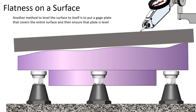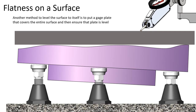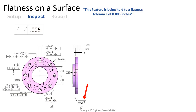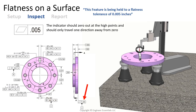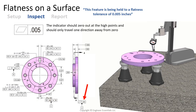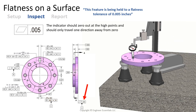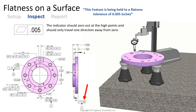Another method to level the surface to itself that's not so iterative is to use a gauge plate. The important part is that the gauge plate is large enough to cover the entire surface you're inspecting and that the two surfaces involved are parallel to each other to a high level of certainty. We take that plate and level it with the height gauge — we simply need to make sure that plate is parallel to the granite table. This method also ensures we've leveled the surface to itself. At any point during this process, if we drag an indicator across that surface and get a value less than our listed flatness tolerance, we can accept that part. During inspection, the indicator zeros out in three spots — the three high points of the surface — and then the indicator needle goes only one direction.